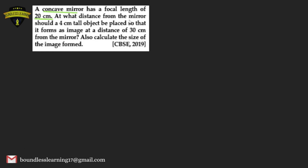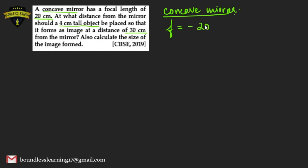The next question: a concave mirror has a focal length of 20 cm. At what distance from the mirror should a 4 cm tall object be placed so that it forms an image at a distance of 30 cm from the mirror? Given: focal length f = −20 cm, height of object = +4 cm.